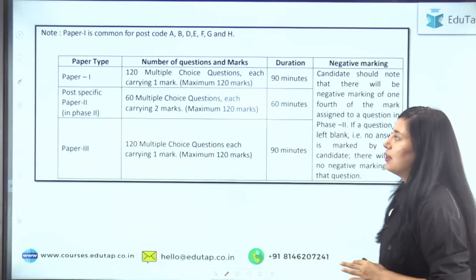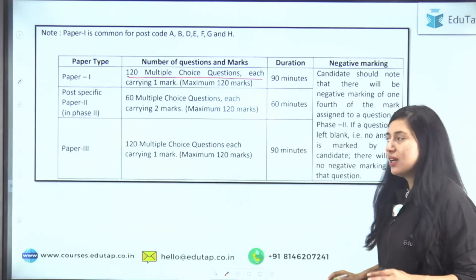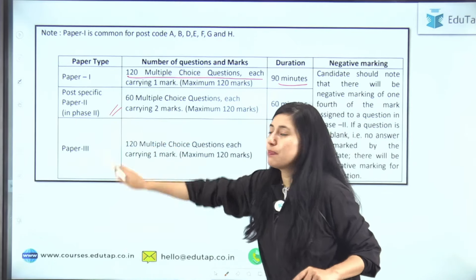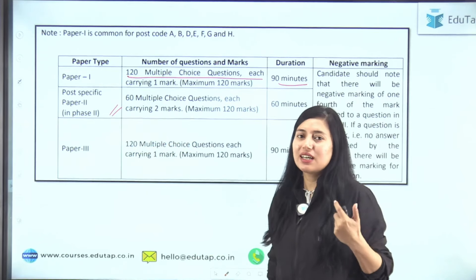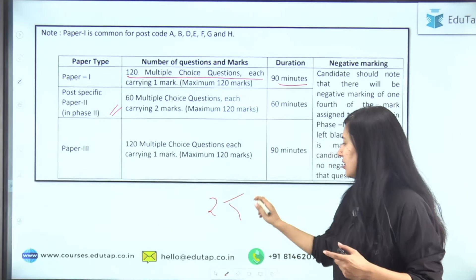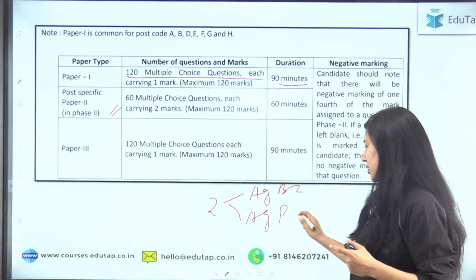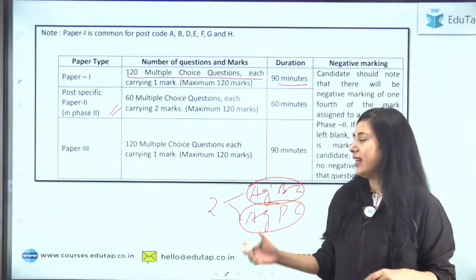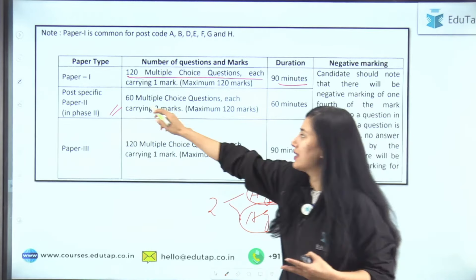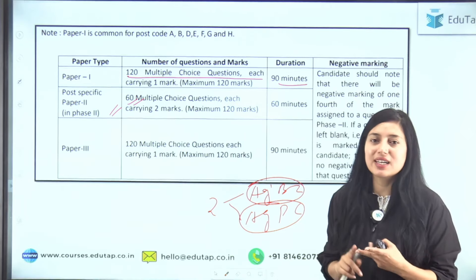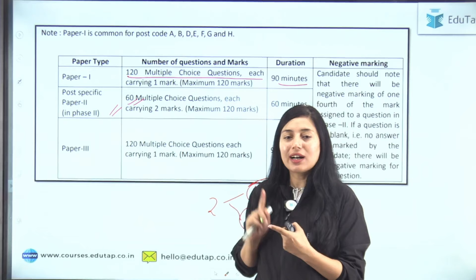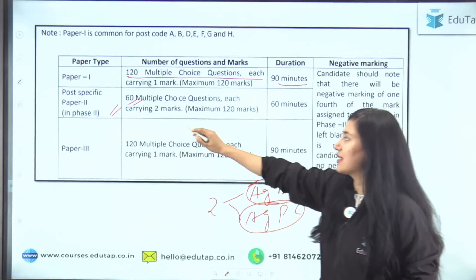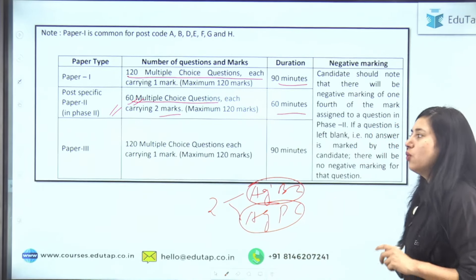Paper 1 will be of 120 multiple choice questions, 90 minutes duration. Paper 2 is post-specific. For example, agar aap Technical ka dete ho aur agriculture opt kiya hai — Technical mein bhi do groups hote hain: Group A (Agriculture, Botany, Zoology) aur Group B (Agriculture, Physics, Chemistry). Agar Group A select kiya hai toh Agriculture, Botany, Zoology se questions hongi 60 marks ke. Agar Accounts mein eligible ho toh BCom level ke Accounts se questions hongi. Subject-specific 60 questions honge, two markers each. Time duration aapko 60 minutes milta hai.